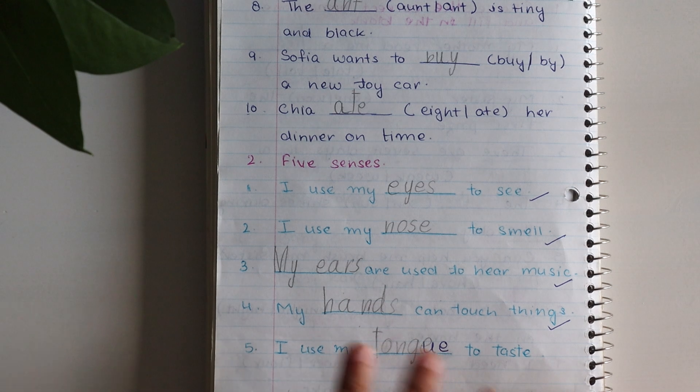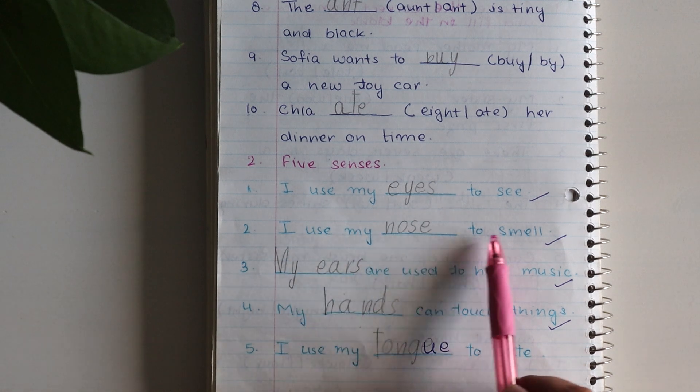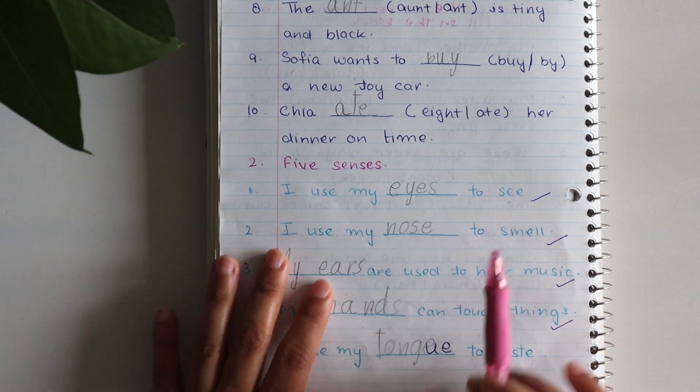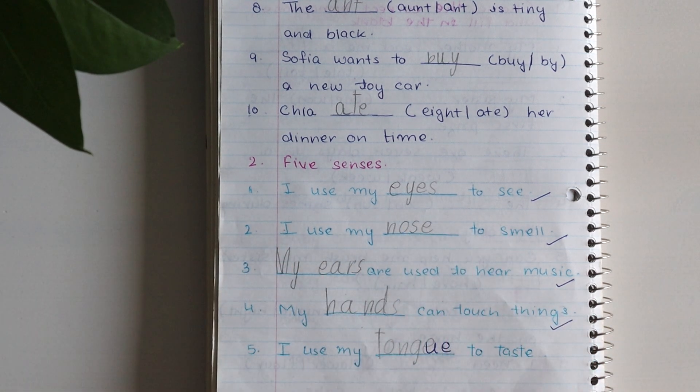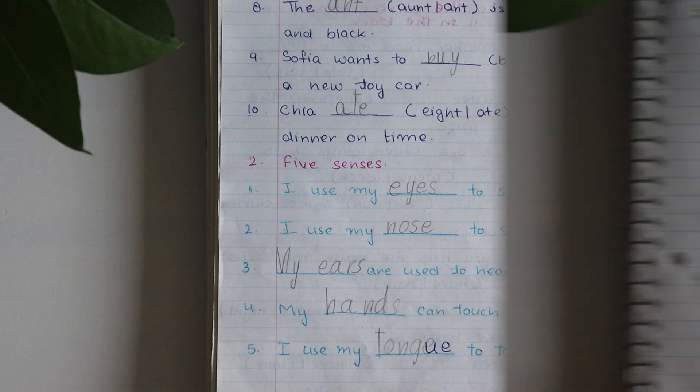Next activity, this is for senses. I have just written some random sentences here like I use my eyes to see, I use my nose to smell, my ears are used to hear music. What the child will do here is simply read the sentences.